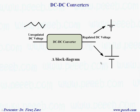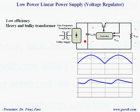When we have a DC-DC converter, basically at the input side we have unregulated voltage and we are going to regulate the voltage and also change the output voltage magnitude. So in this case, we may increase or decrease the output voltage. Let's start with linear power supply and then we can compare it with switch mode power supply.